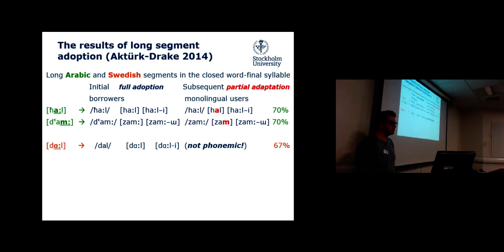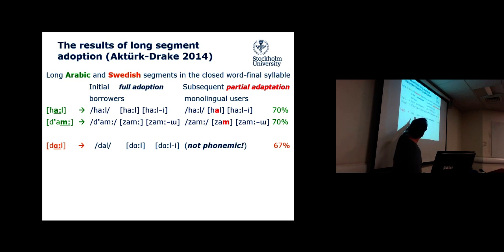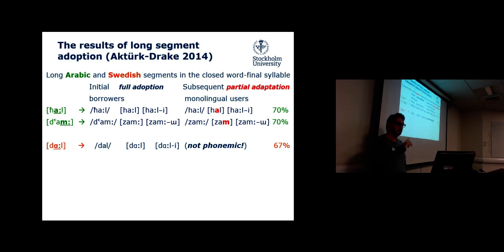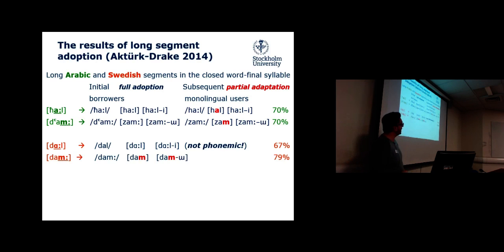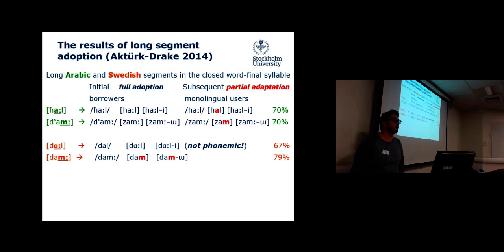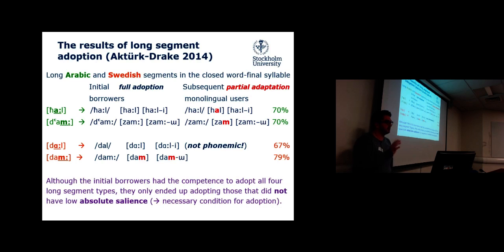Looking at the results for long segments in word-final syllables: in Arabic loanwords, the reconstructed Ottoman borrowers preserved the long vowel in both suffixed and unsuffixed contexts. Contemporary data show length is preserved in unmarked positions but shortened in marked positions in 70% of words of this type — similarly for long consonants from Arabic. This suggests underlying length in 70% of the loanwords in the dictionary. The initial Ottoman elite borrowers show full adoption in all positions, whereas today's speakers show partial adaptation, shortening vowels in unsuffixed contexts.